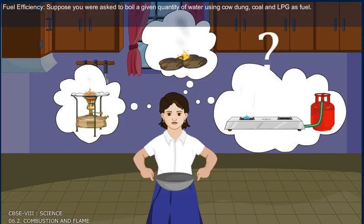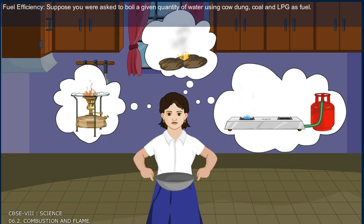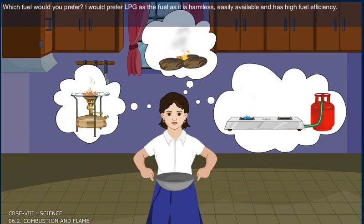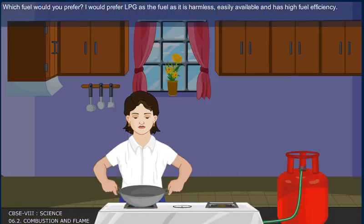Fuel efficiency. Suppose you were asked to boil a given quantity of water using cowdung, coal and LPG as fuel. Which fuel would you prefer? I would prefer LPG as fuel as it is harmless, easily available and has high fuel efficiency.